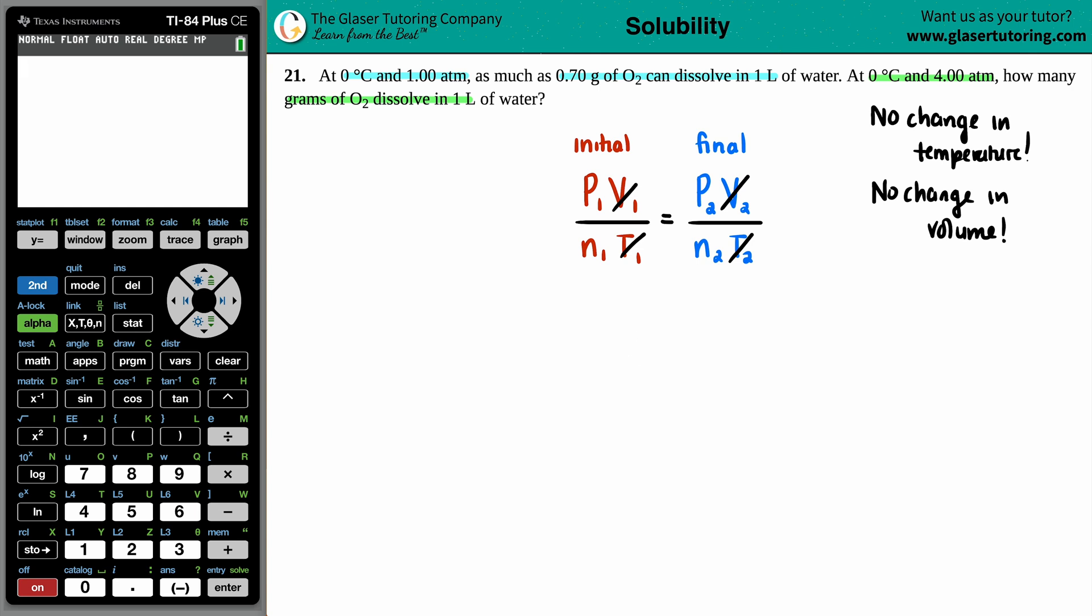So now you're down to just two variables. Pressure over N, right? P divided by N equals P divided by N. Now the pressure is in ATM. In this case, now we have P1 over N1 equals P2 over N2.